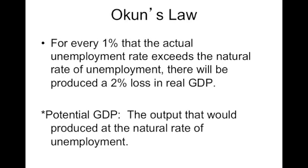The costs of unemployment are quantified using Okun's Law. For every 1% of cyclical unemployment — which is the difference between the natural rate and the actual rate of unemployment — the economy ends up suffering a loss of 2% of real GDP output. So your actual GDP will be less than your potential GDP whenever there's cyclical unemployment.